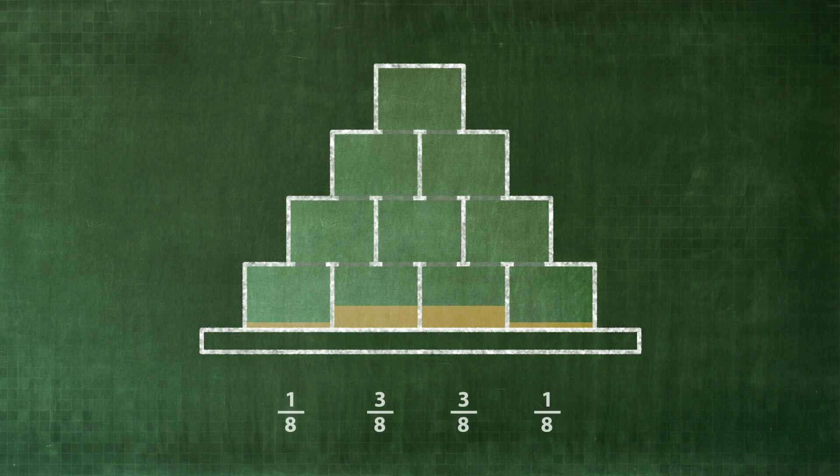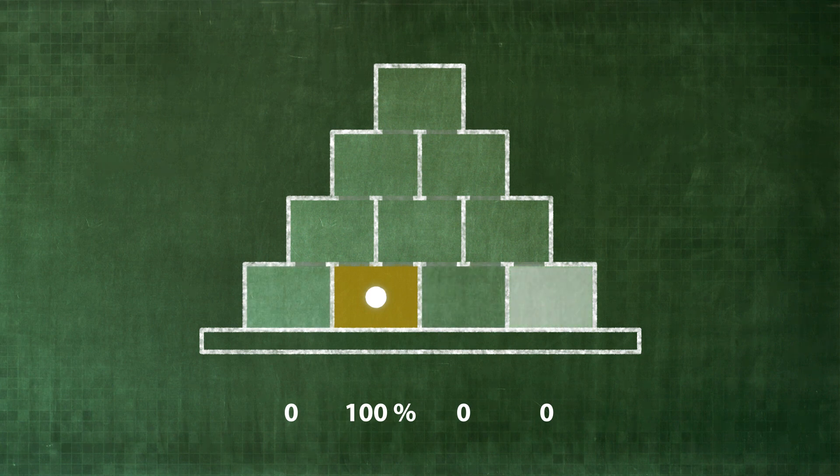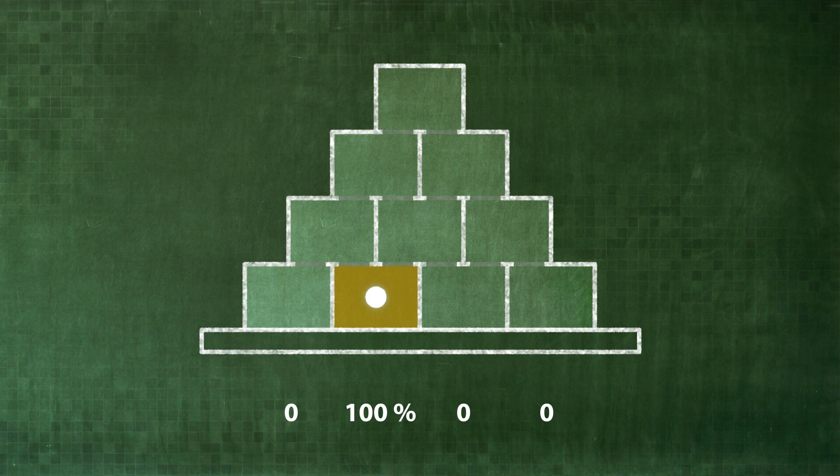Wherever there are causal connections between probabilities, each measurement alters all the other probabilities, without any delay, irrespective of how far a box is away from the measurement. Thus, any given measurement brings about a non-local change in all probability distributions.